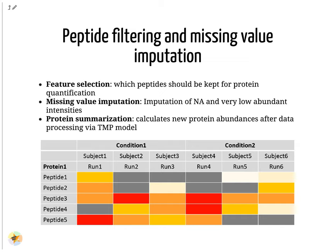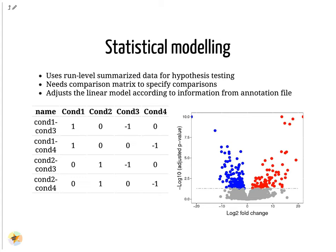Protein summarization is by default performed via Tukey's median polish for robust parameter estimation with median across rows and columns. The calculated run-level protein summaries are used for statistical group comparison. Any two conditions can be compared to find differentially abundant proteins between them. MSstats uses a family of linear mixed models for this. The model is automatically adjusted for the comparison type according to the information in the annotation file — meaning MSstats accounts for technical replicates, paired designs or time course experiments automatically.